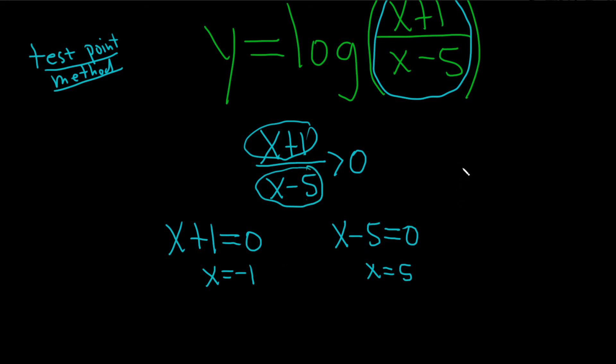The next step is to plot these two numbers on a number line and pick test points. Here is negative 1, and here is 5. What you're supposed to do is pick a number less than negative 1 and plug it into this. If it's true, you shade that region. If it's not true, you don't shade.